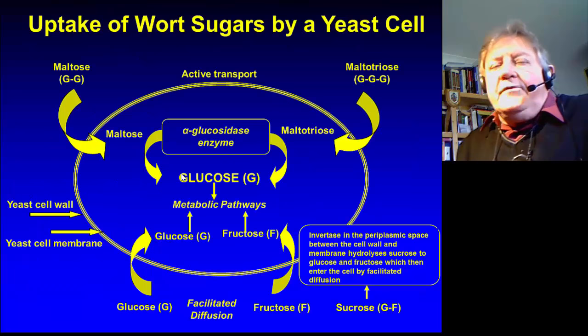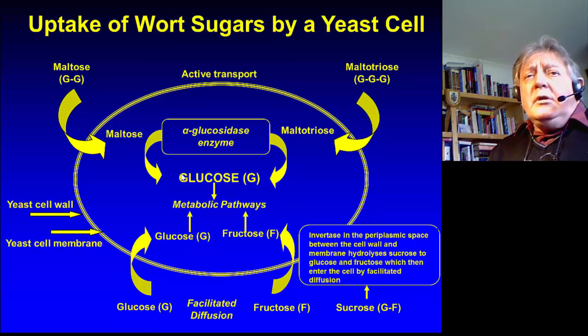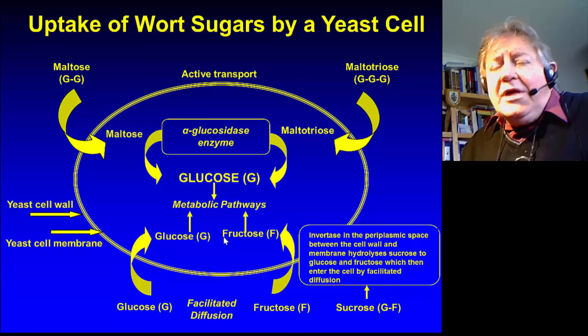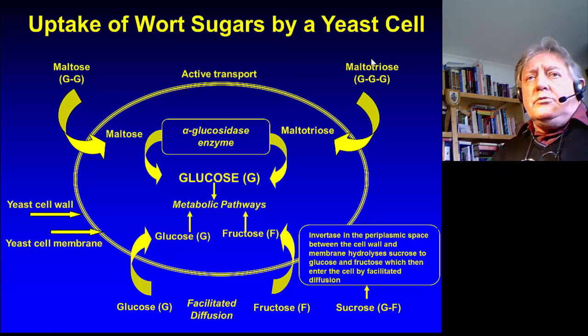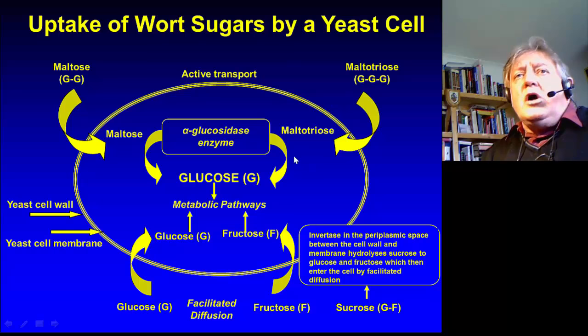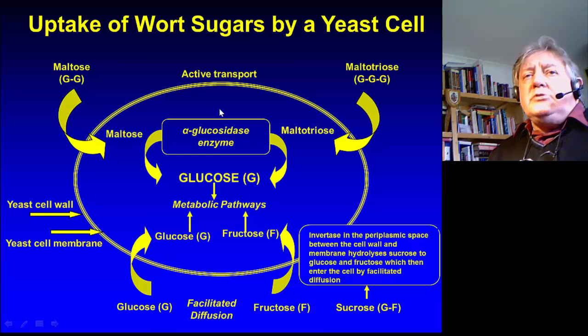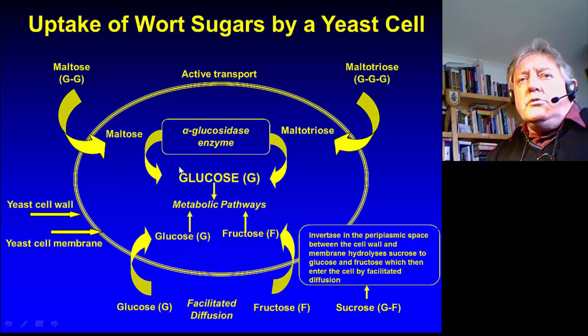The uptake of sugars by yeast has been studied by many people. Glucose and fructose are taken up by the yeast in a passive or facilitated transport process — it doesn't require the expenditure of energy. Whereas the uptake of maltose and maltotriose is by active transport, which requires the expenditure of ATP. Once the maltose and maltotriose are inside the cell, alpha-glucosidase enzyme hydrolyzes the two sugars to glucose, and the glucose enters the common glycolytic metabolic pathway of the yeast.